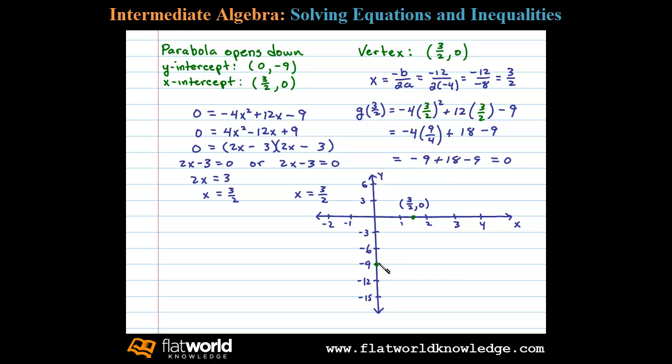And in this case we only have two points and that doesn't seem like enough to actually graph a parabola, so we need at least one more point. Let's see what happens when x is 3. When x is 3, then we need to find the corresponding y value—in other words we need to calculate g(3). So in this case we have -4 times 3² plus 12 times 3 minus 9.